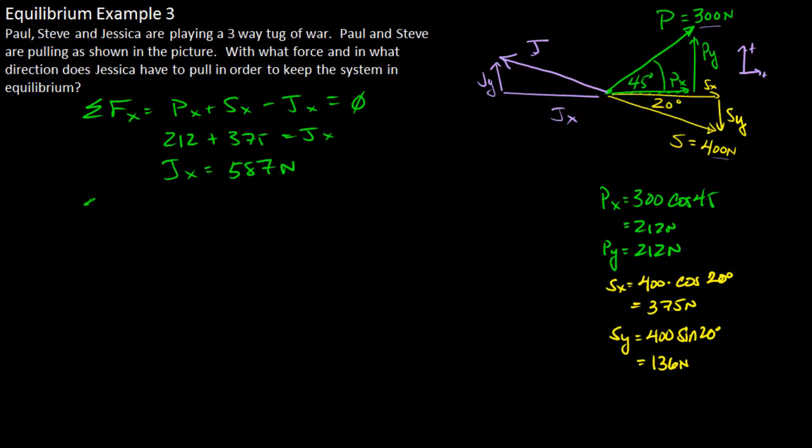We can do the same thing for the y-direction. So we have Jessica's force in the y plus Paul's force in the y minus Steve's force in the y. It's going to be balanced out to be zero. Plug in our numbers. Jessica's force in the y is going to be equal to Steve's force in the y, which is 136 minus Paul's force in the y, which is 212. So Jessica's force in the y is going to be a negative 76 newtons.